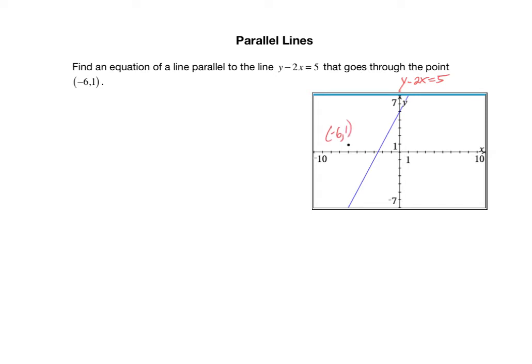It's really important to first get a visual of what it is we are looking for. I've actually already graphed the line and plotted the point. In general, to solve problems like this, you do not need to draw a graph. But I'm setting this up with a graph first so you can visually understand what it is that we're trying to do. What we are looking for is another equation of a line that goes through that point and is parallel to the already given line. This is the line we're looking for here. We need to find an equation of this line. It's got to be parallel to this line and it has to go through the point (-6, 1).